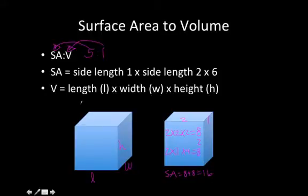And to calculate for the volume, all you have to simply do is multiply the length times the width times the height. So in this case, since we have 2 by 2 by 1, it would be 2 times 2 times 1, to give us a volume of 4 units cubed.